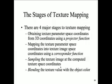There are four different stages of texture mapping. First, you obtain the texture parameters of the space coordinates from the 3D coordinates using a projector function — we're projecting and getting the coordinates we're going to map. Then you map the texture parameter space using the texture image, using the corresponding function to map it. This is all built in for you — now we just say texture map and the function does it for you.